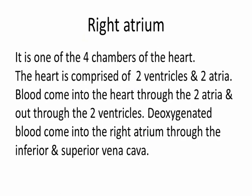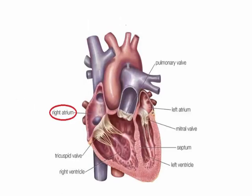Right atrium. It is one of the four chambers of the heart. The heart is comprised of two ventricles and two atria. Blood comes into the heart through the two atria and out through the two ventricles. Deoxygenated blood comes into the right atrium through the inferior and superior vena cava.